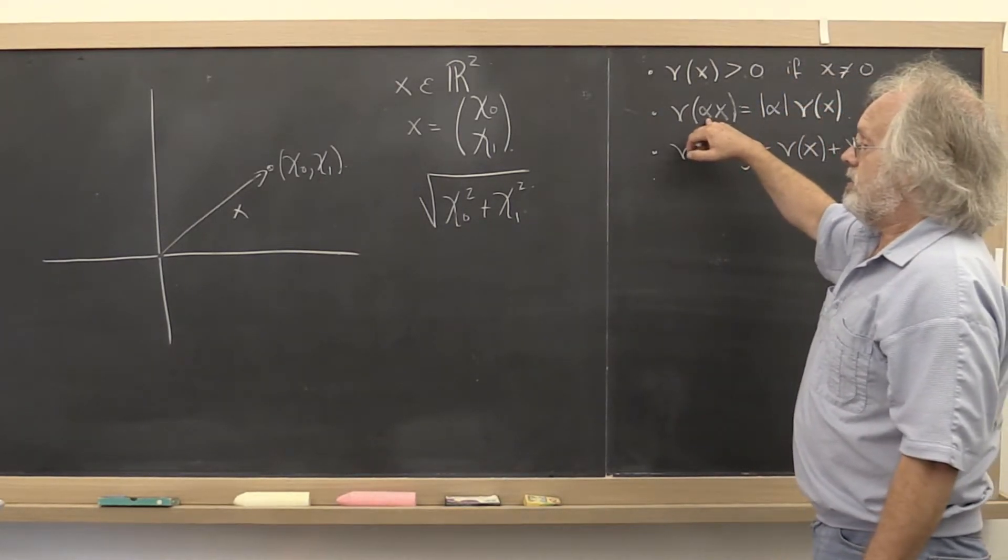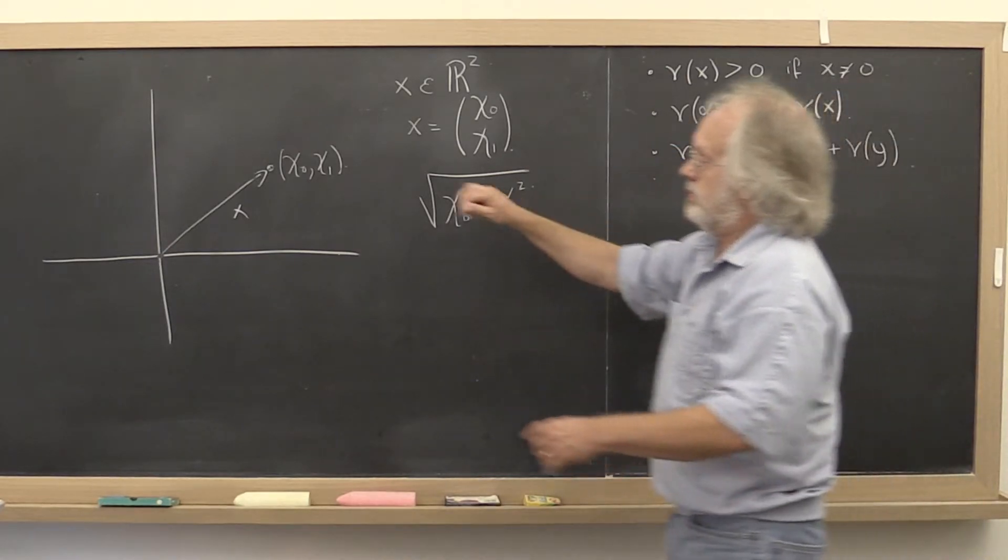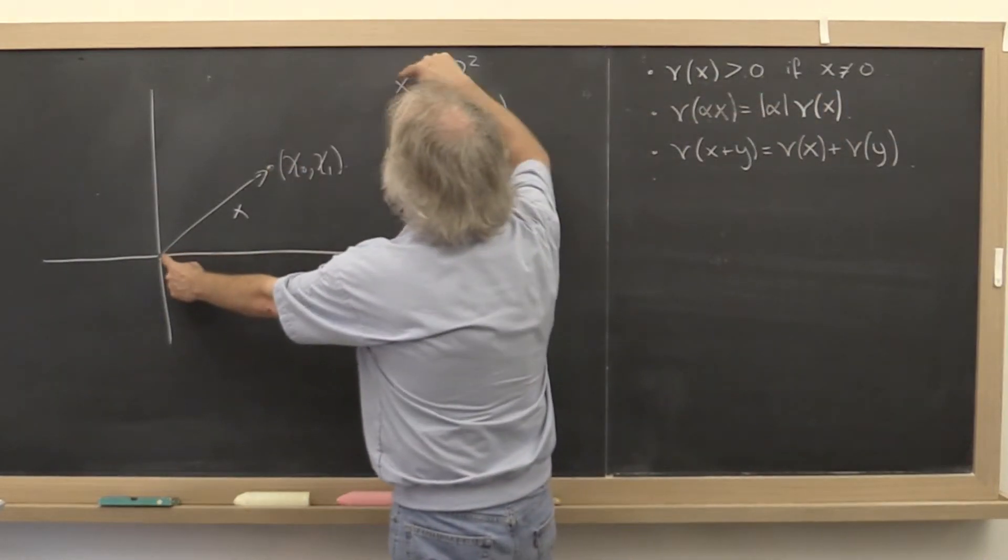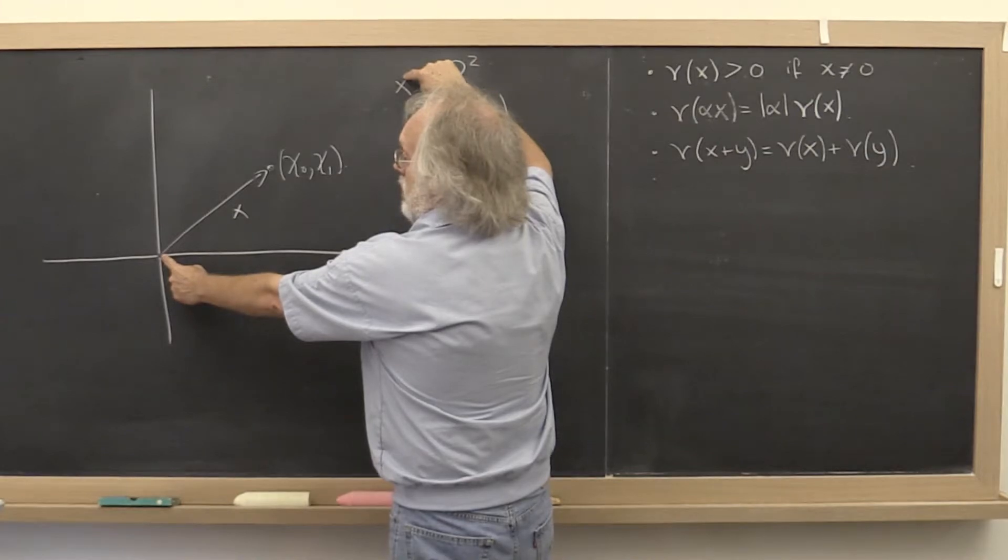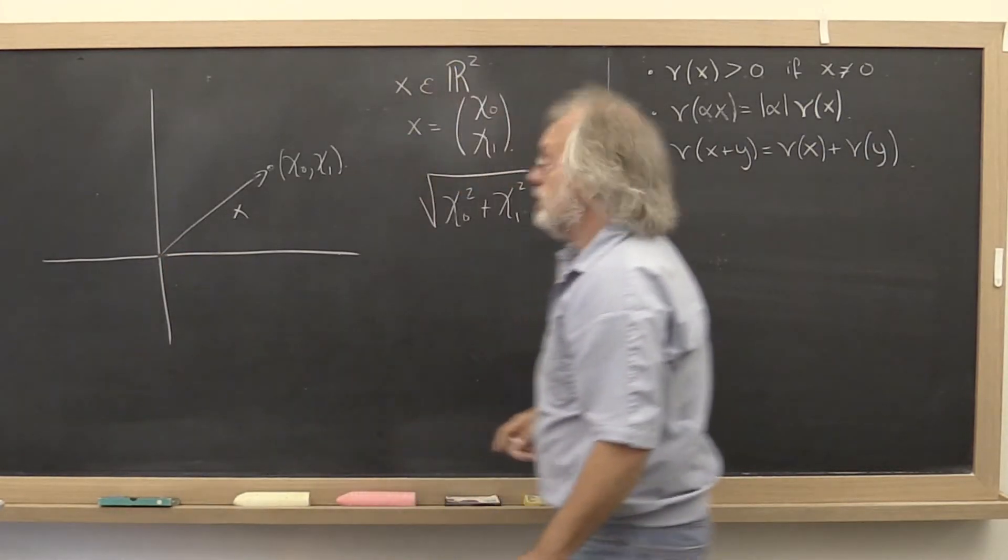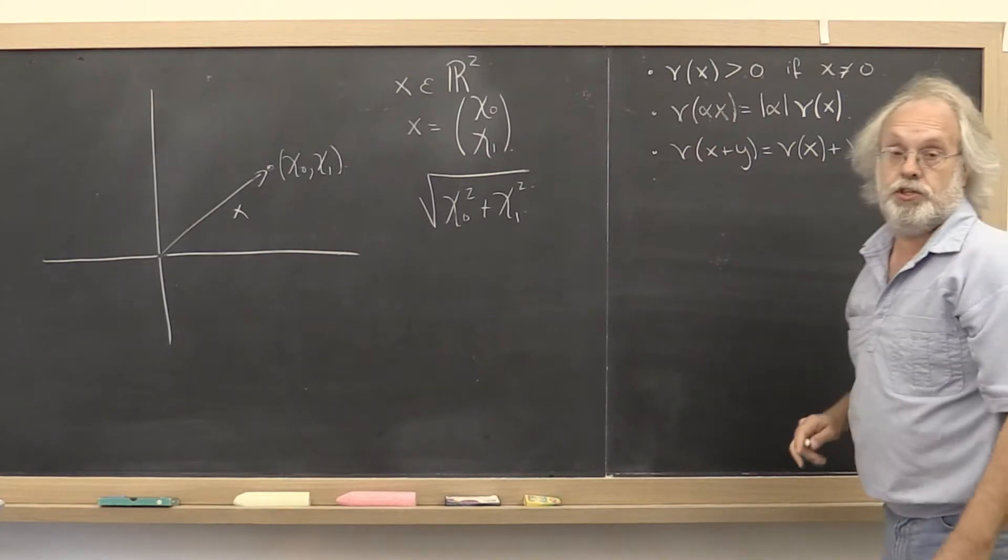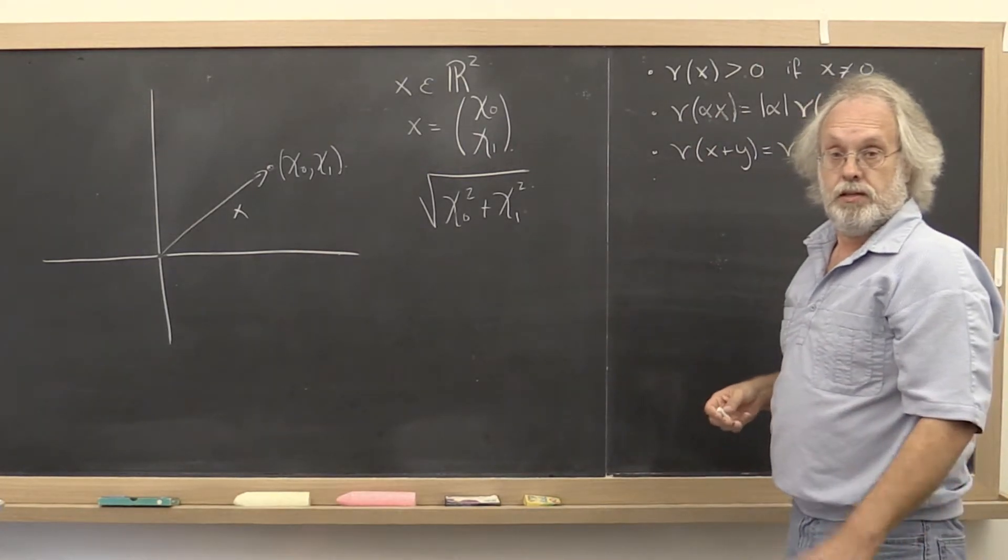It's also the case that if you scale the vector, then you merely are stretching the distance proportionally. So the second condition for it to be a norm is met.